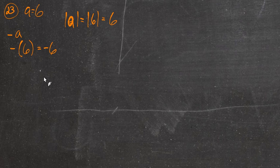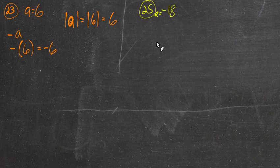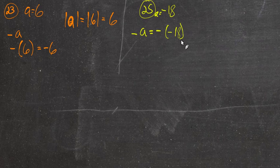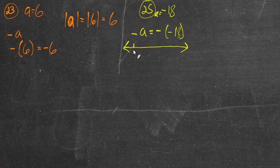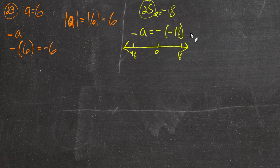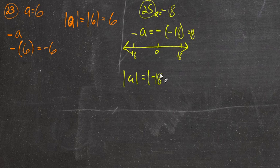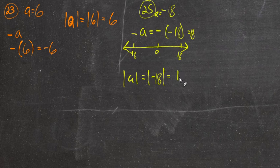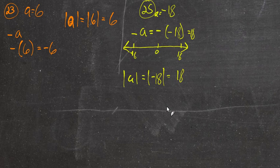By comparison, look at number 25 where a is negative 18. The opposite of a — what is the negative of negative 18? The opposite of a negative number is just mirrored over 0, so the opposite is positive 18. The absolute value of negative 18 is just how far away negative 18 is from 0, stated as a positive: that's positive 18. So absolute value just turns everything positive — if it's positive it stays positive, if it's negative it becomes positive. The absolute value is always positive.